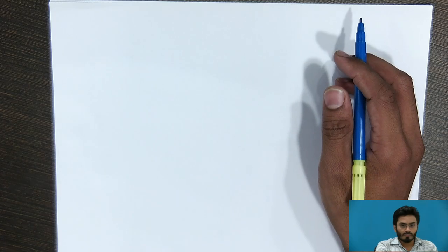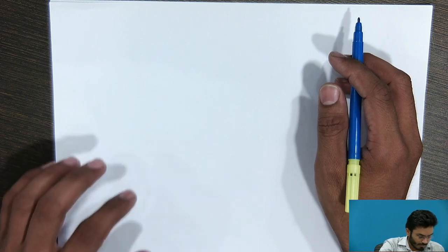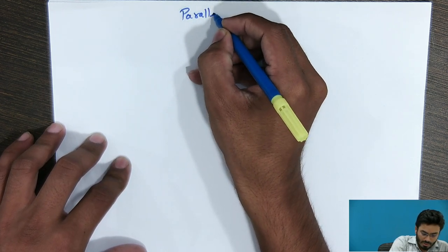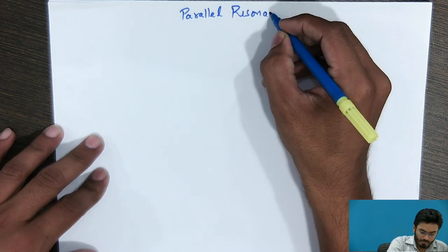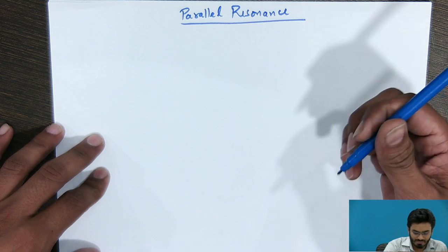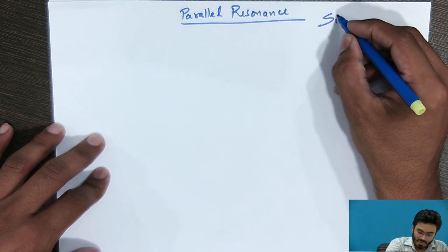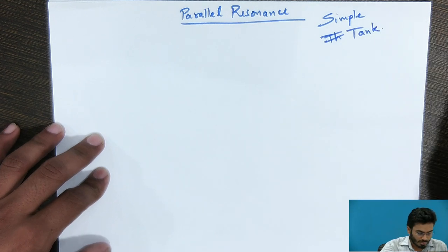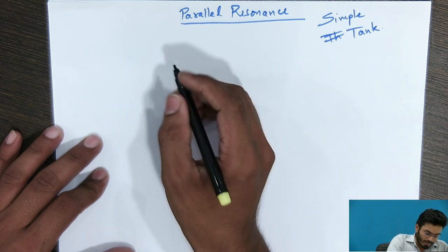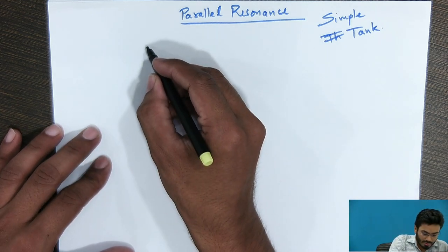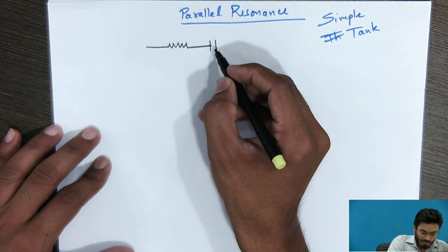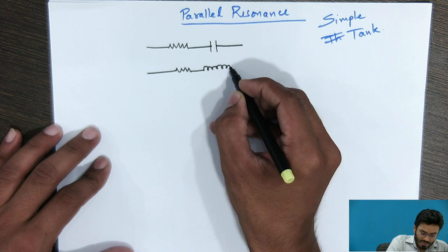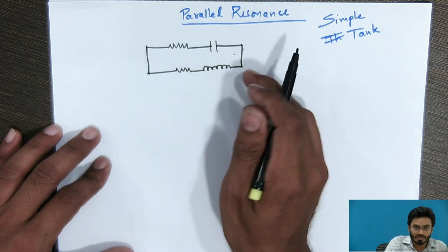In the previous video we looked at a series resonant circuit. Now let me introduce parallel resonance. In a broader view, parallel resonance can be classified into two types: the simple parallel resonance circuit and the tank circuit. In a simple parallel resonance circuit, we have a capacitor and an inductor, but this time we connect them in parallel — this is an important aspect to understand.